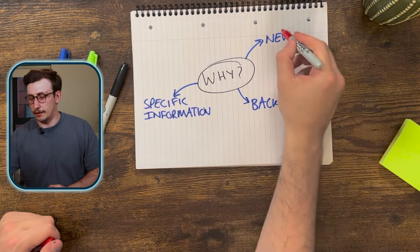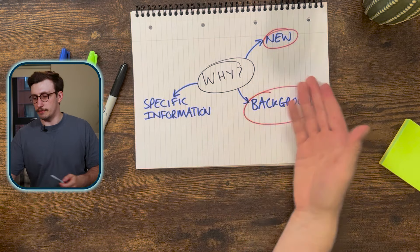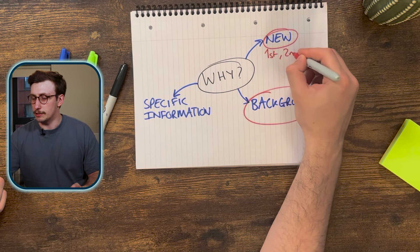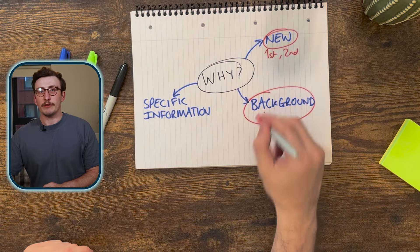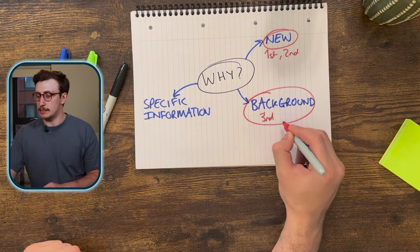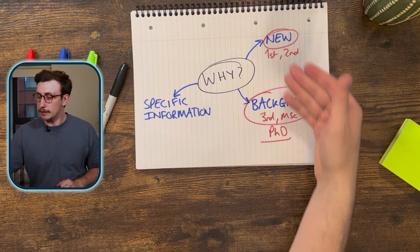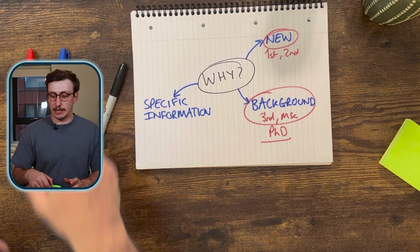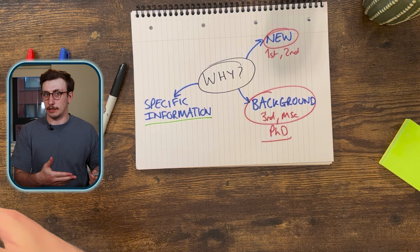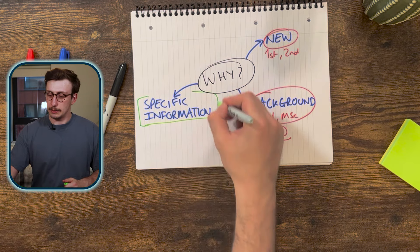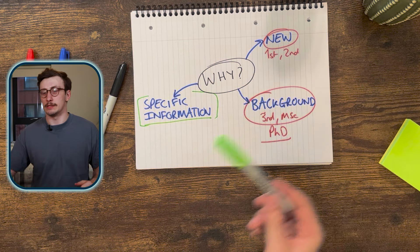Most students will fall into either the first or second category. You're either new to the field — maybe in first or second year, in the learning phase of your degree — or you're in the background stage, typically for third-year research projects, masters, or PhDs, where you're looking for papers to support your introduction and literature reviews. There's also the chance you're after specific information if you already know what you're looking for.